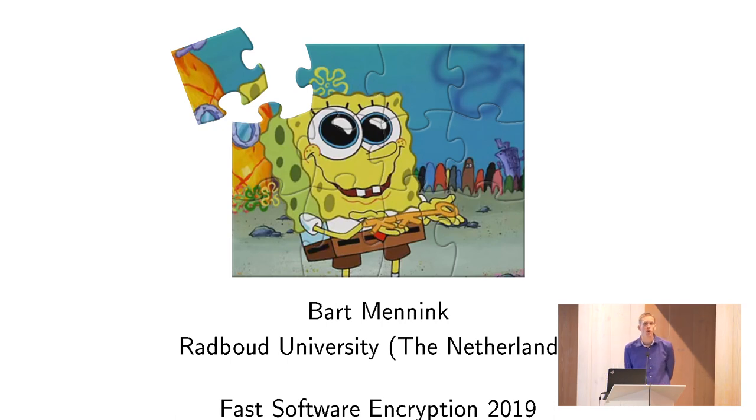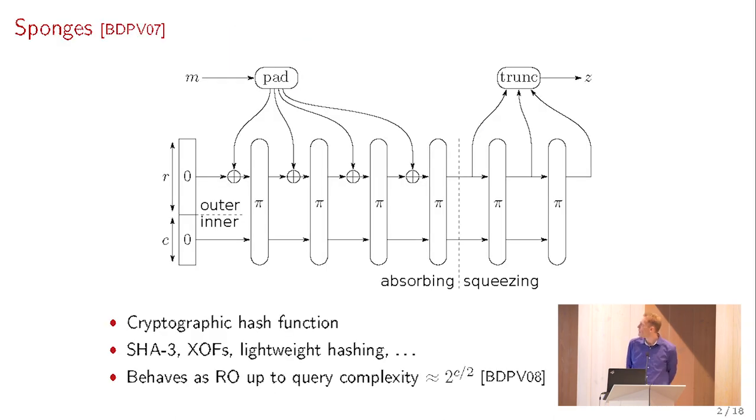I think most of you know the basic sponge construction. It's a hash function. It takes a permutation, in this case permutation pi, and then you have an inner part and an outer part, and the message is always absorbed in the outer part step by step. Then you permute the state, and in the end you truncate data by squeezing the outer part. The construction turns out to be very popular.